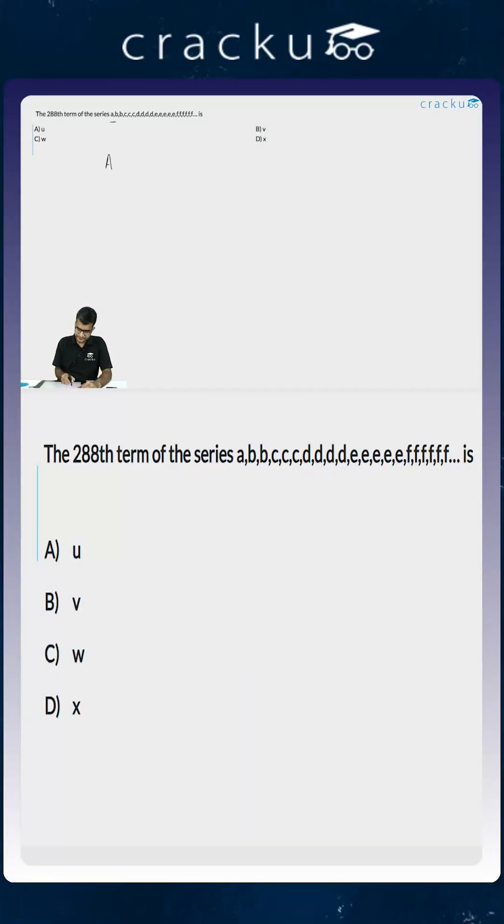Here A is repeated once, B is repeated two times, C is repeated three times, D is repeated four times, and so on. You want to figure out which of them will be the 288th term.